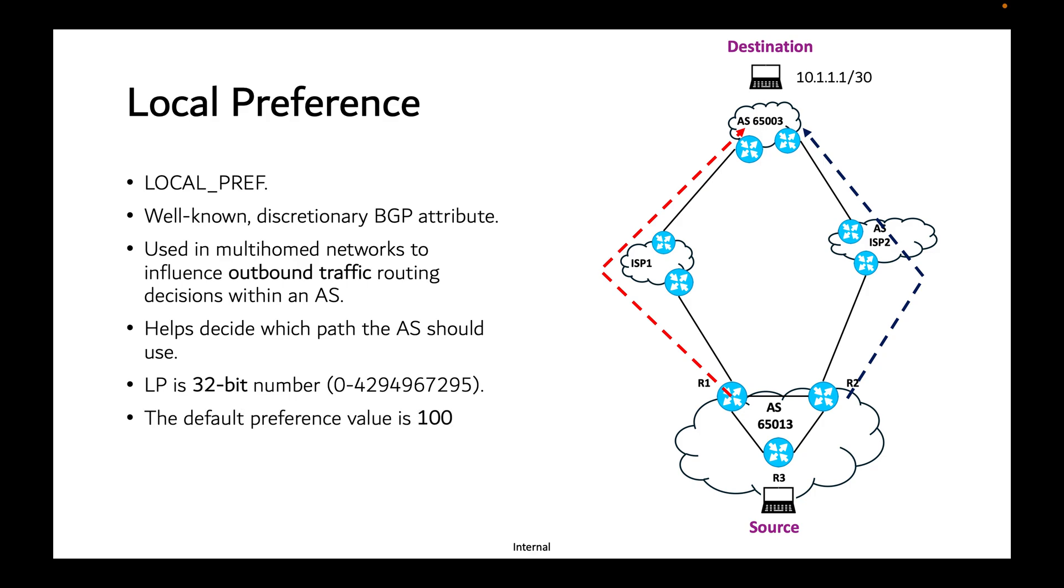The default value assigned to any route is 100. If you have seen the BGP routing table details, you will find a local preference value of 100. Local preference can be manually adjusted to prefer certain paths over others, or you can keep it default. If you want to change it, increase it, or decrease it, you can.